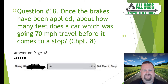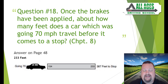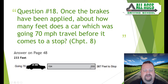Question number eighteen: once the brakes have been applied, about how many feet does a car going 70 miles per hour travel before it comes to a stop? Answer on page 48 — 233 feet. Looking at the diagram: going 70 mph, the first number is reaction distance (how long from seeing danger until your foot hits the brake), and the second number is braking distance. Combined, your approximate stopping distance is 387 feet total. But this question asks about braking only, so the answer is 233 feet.